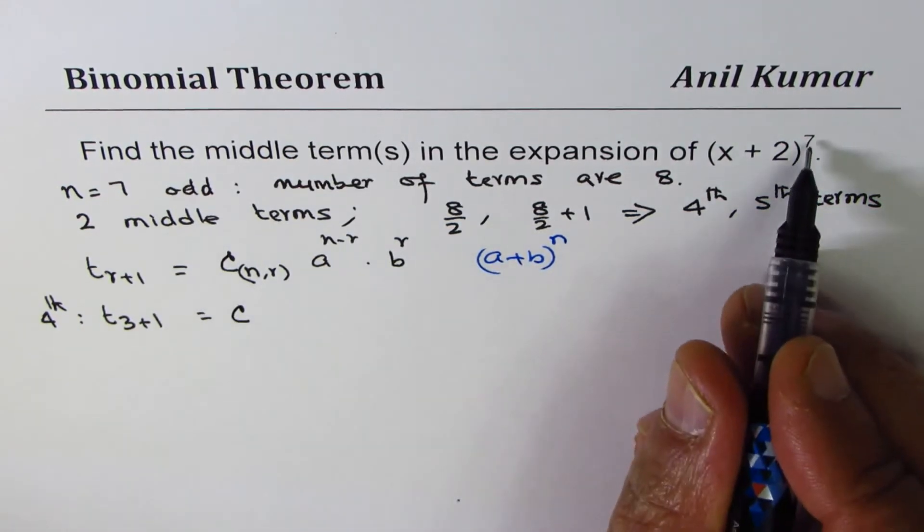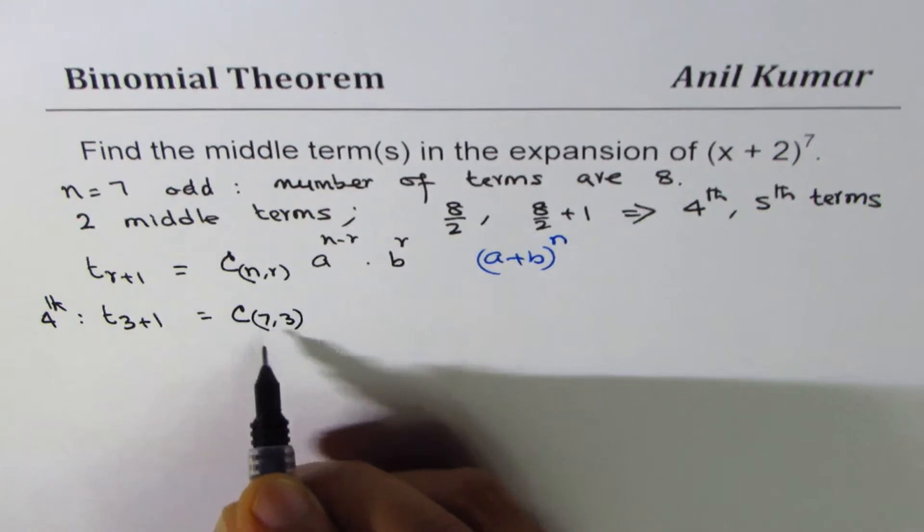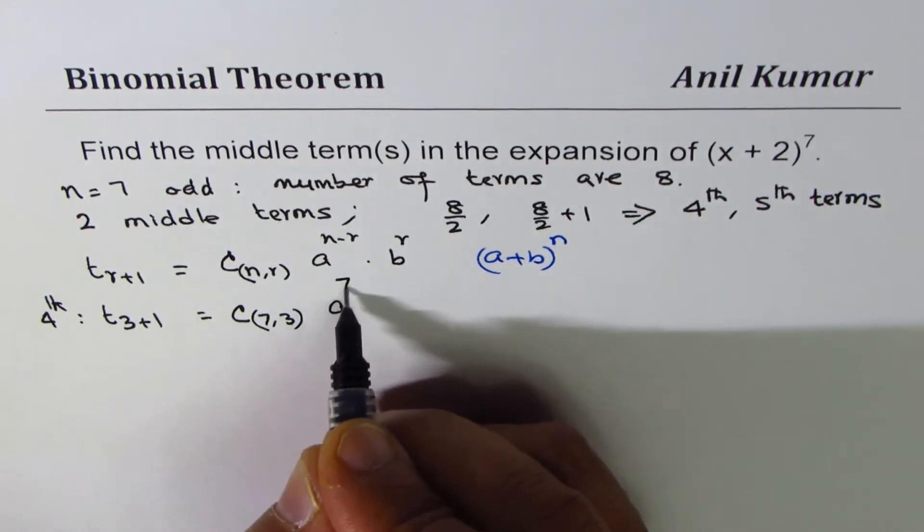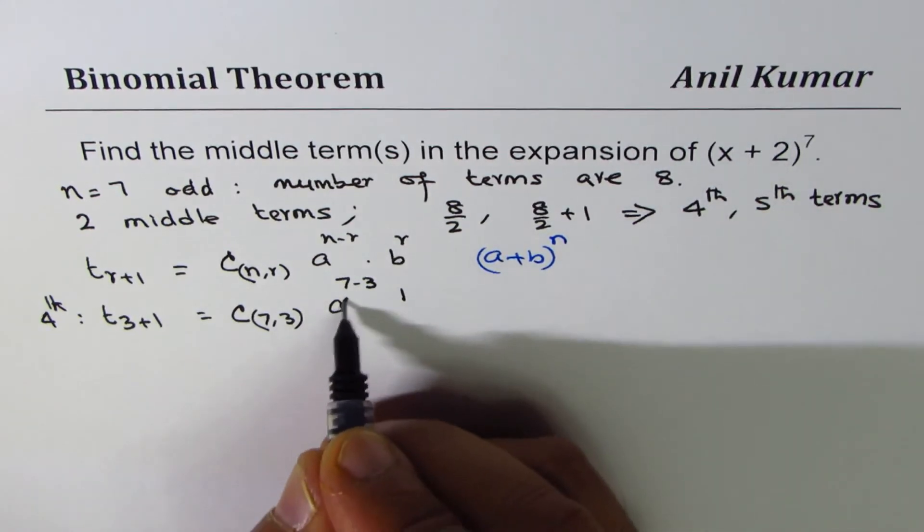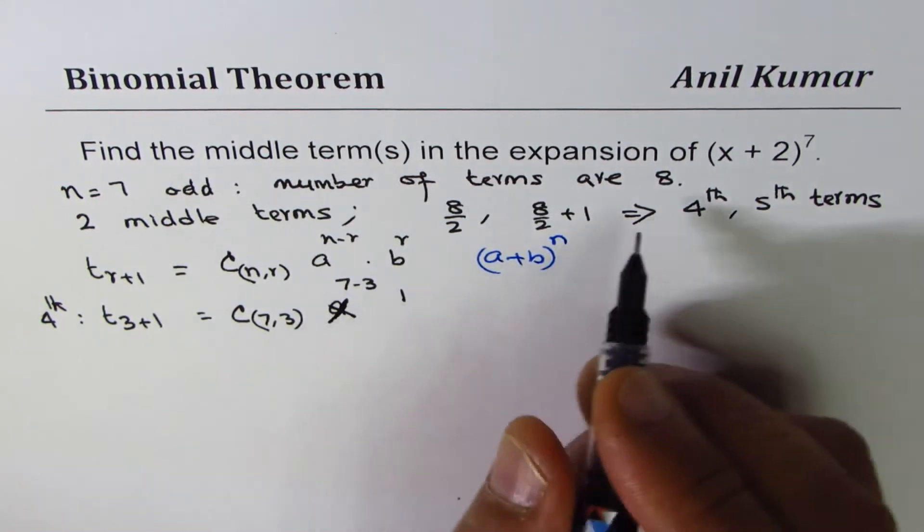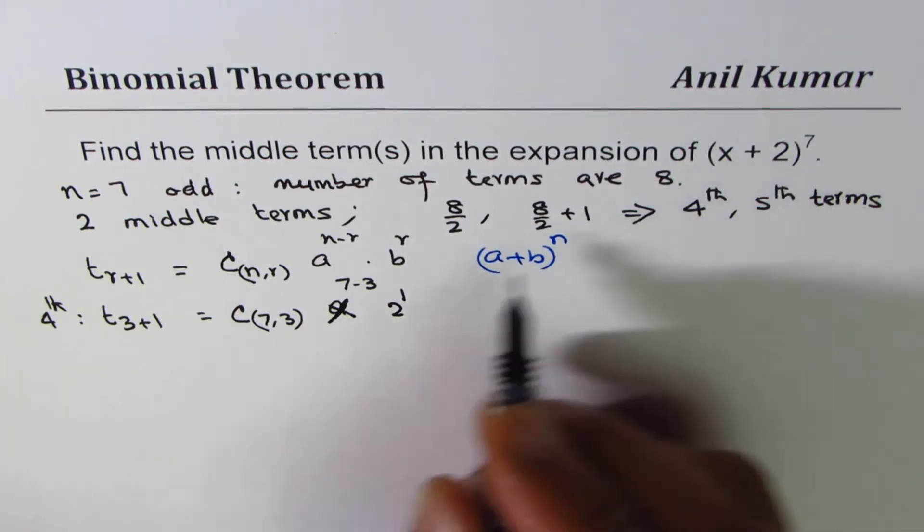So we have 7C3, A to the power of 7 minus 3—sorry, X to the power of 7 minus 3, and 2 to the power of 3.